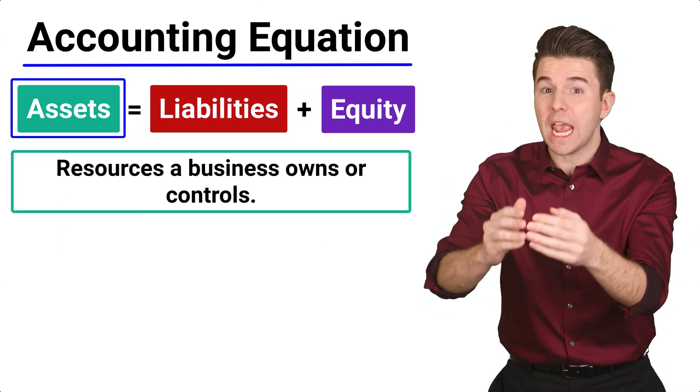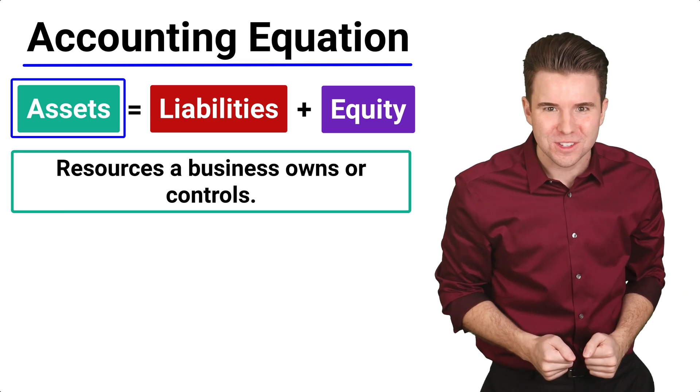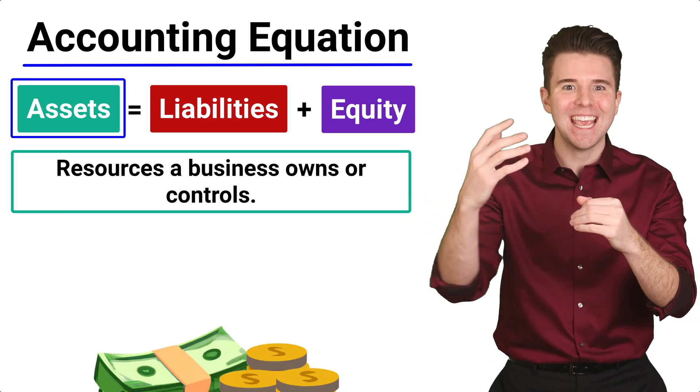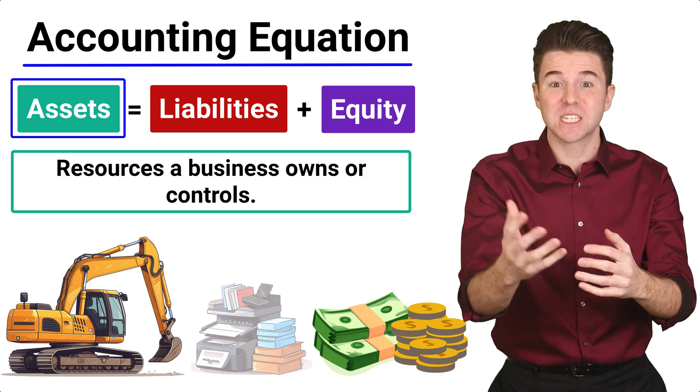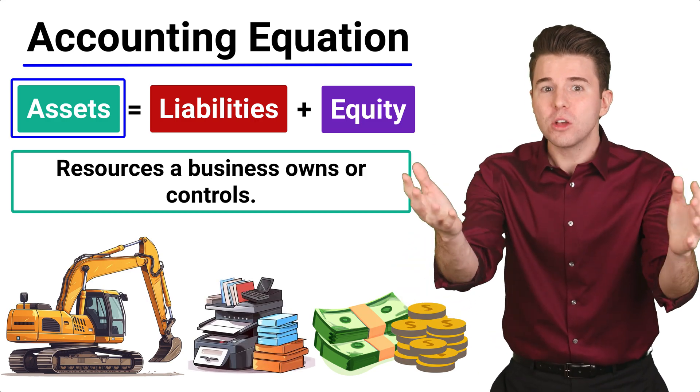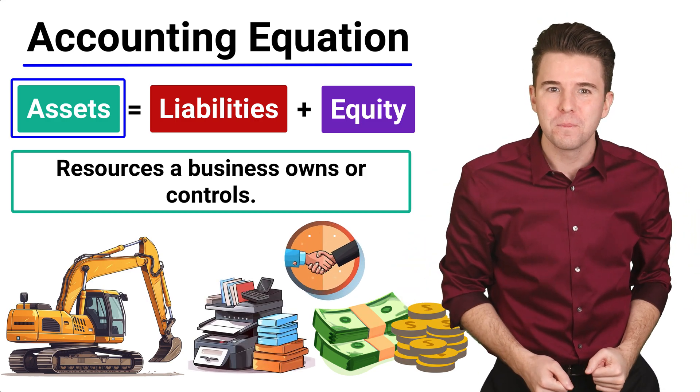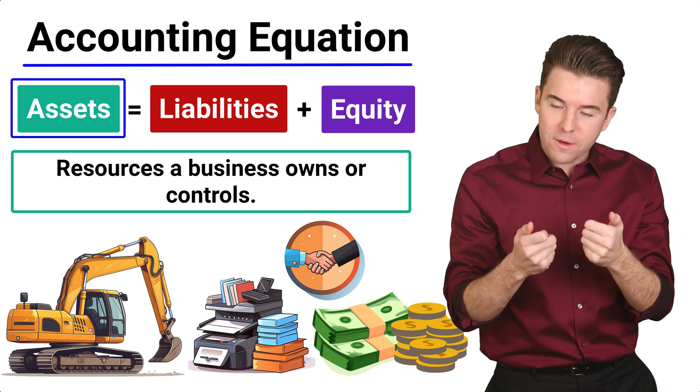Assets are resources a business owns or controls, which are things like cash, machinery, and supplies. Assets also include accounts receivable, which is money owed from customers.